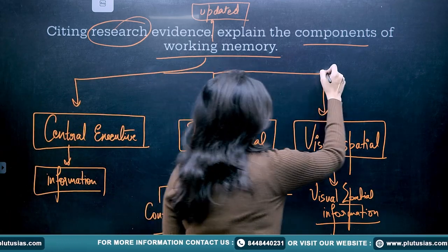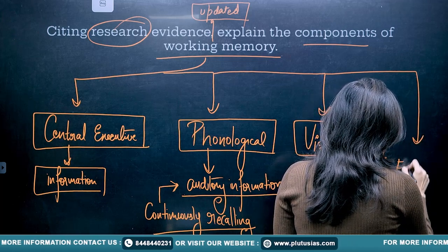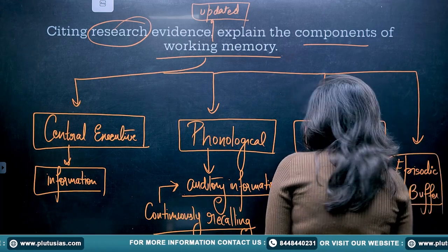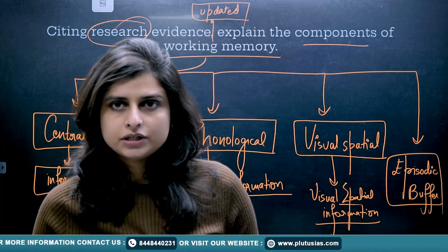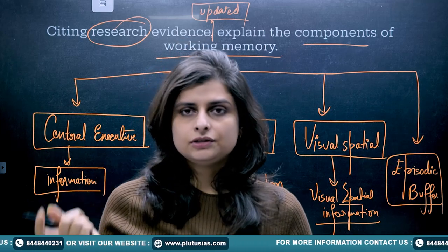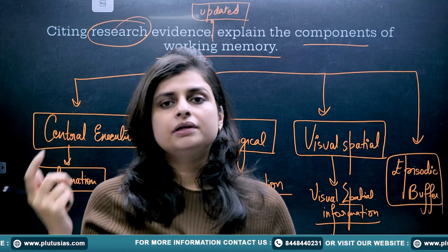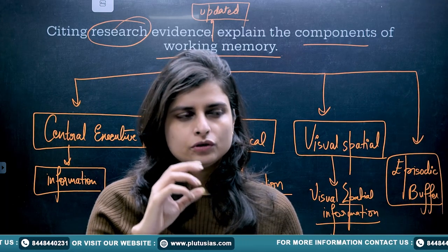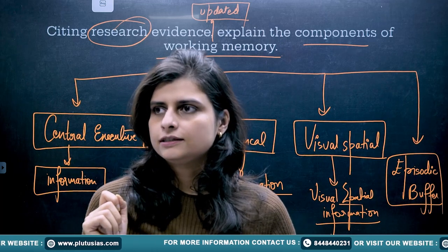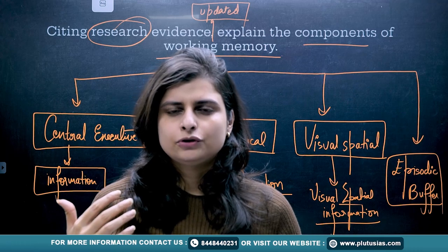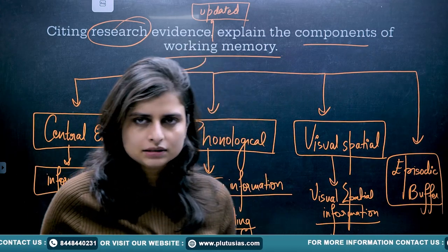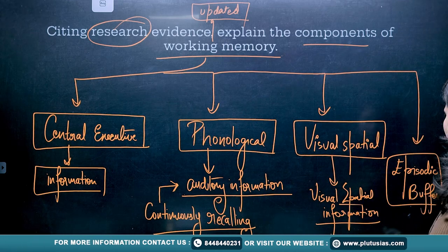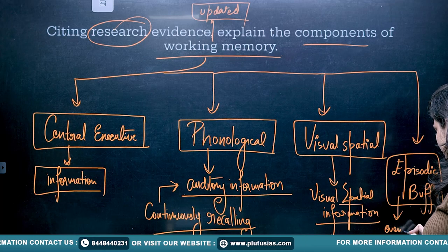Other than those three parts, there is one more segment — the episodic buffer. Any information that is getting processed remains redundant if we don't connect the dots. How are you going to remember the information that got processed? It is only possible if that information is connected and can be recalled through certain events or things happening in front of you — you can remember through an episode. So this part retains information in the form of events.